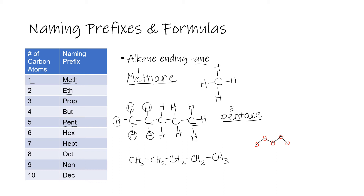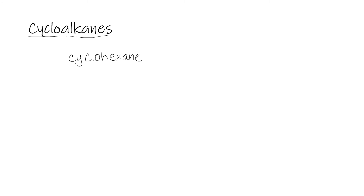Hydrocarbons can also form ring structures called cycloalkanes, where the prefix 'cyclo' means ring. Like regular alkanes, cycloalkanes have only carbon-carbon single bonds. An example of a cycloalkane is cyclohexane.